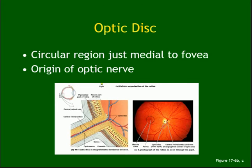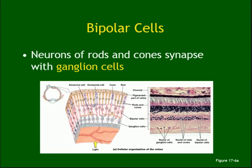There are horizontal cells and amacrine cells in between the photoreceptors and ganglion cells in the retina. Their function is to either facilitate or inhibit the communication between the photoreceptors and ganglion cells — they control the passage of the signal depending on the situation.